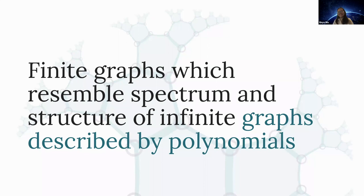Let me now properly talk about what I mean by resembling the spectrum and structure of these infinite graphs. Basically, for all these polynomials of permutations, I want to find finite graphs that match the infinite graphs. Let me talk about the graph structure piece first. The infinite object is described by a matrix polynomial of infinite permutations, so the natural idea is to subsample these with finite permutations — replacing the infinite permutation matrices with finite ones.